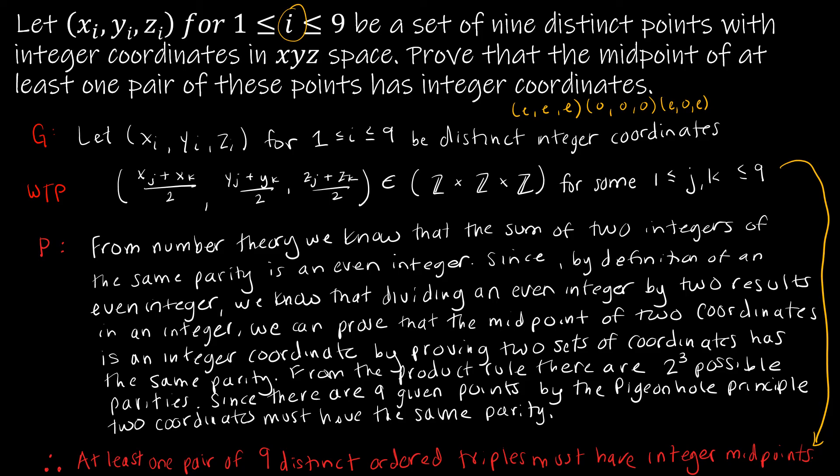So from the pigeonhole principle, since we have nine given points, which is the K, and only eight boxes, then we must have two coordinates that have the same parity. So we have nine pigeons in only eight boxes. Therefore, we know by the pigeonhole principle that two coordinates must have the same parity.